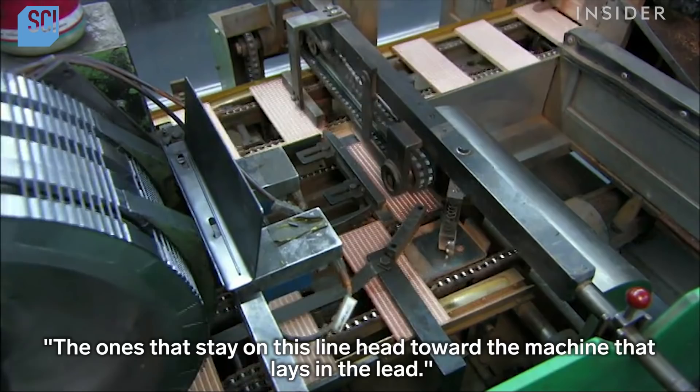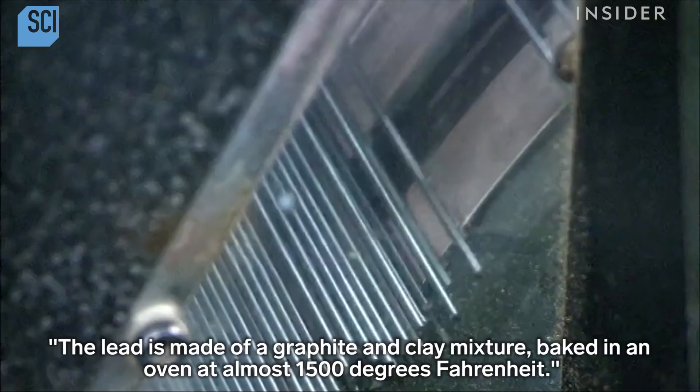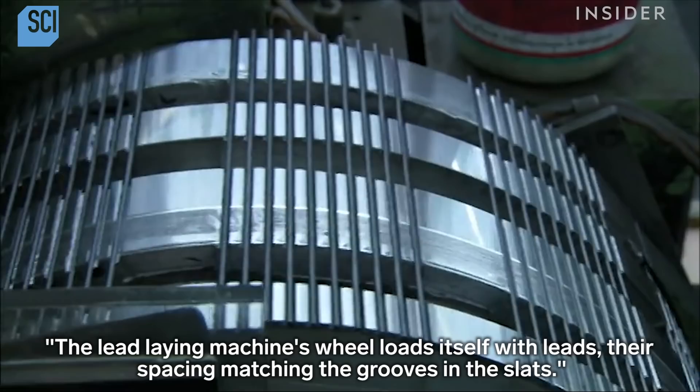The lead is made of a graphite and clay mixture, baked in an oven at almost 1500 degrees Fahrenheit. The lead laying machine's wheel loads itself with leads, their spacing matching the grooves in the slats.